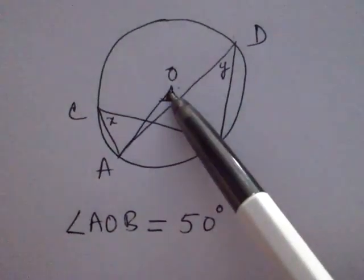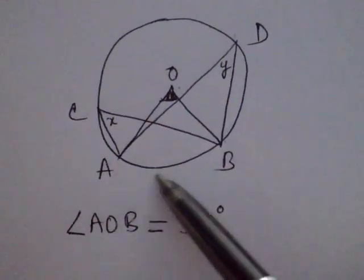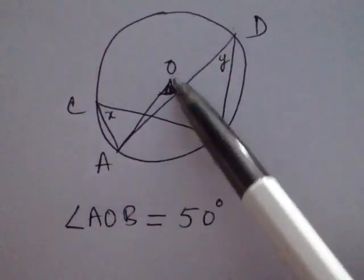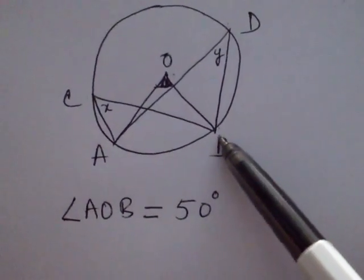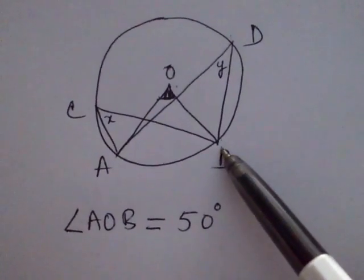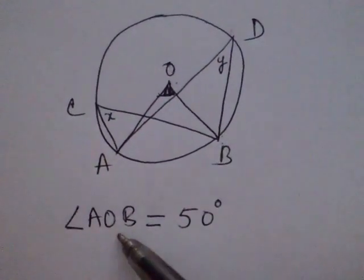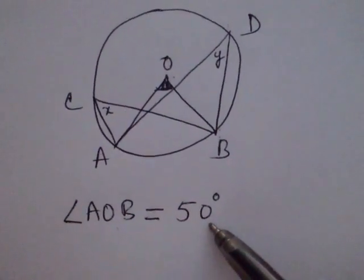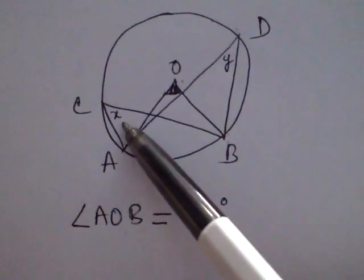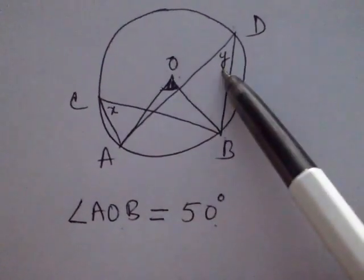O is the center of the circle. The arc AB makes angle AOB at the center of the circle. It is given that the measure of angle AOB is 50 degrees, and we have to find the values of X and Y.